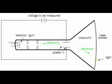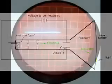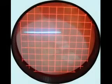The electrons have much less mass than metal plates, and are moved by this electrostatic force very quickly and readily. Their deflected path can be traced as the electrons impinge on the glass end of the tube,